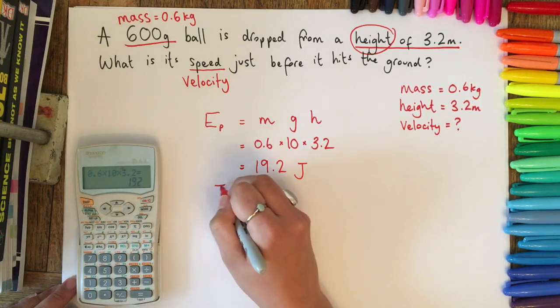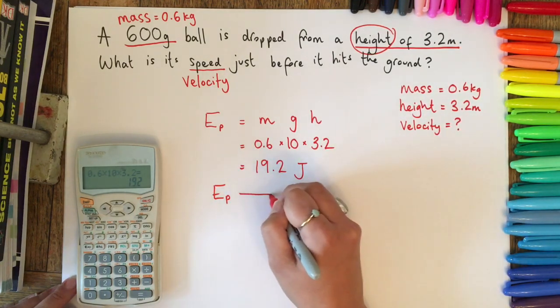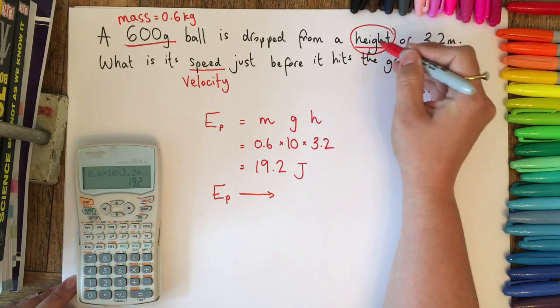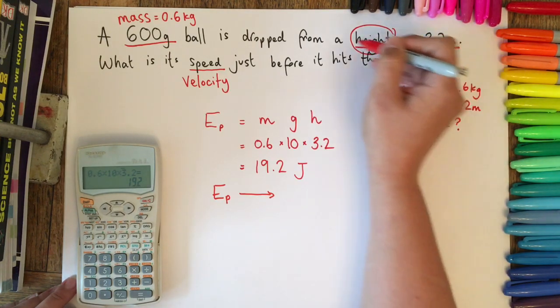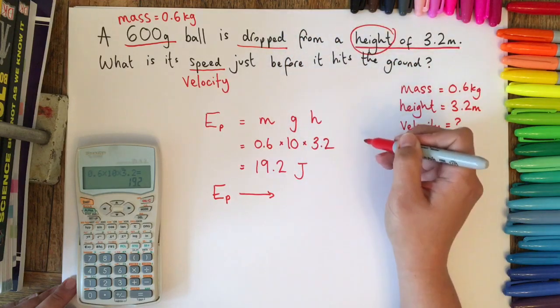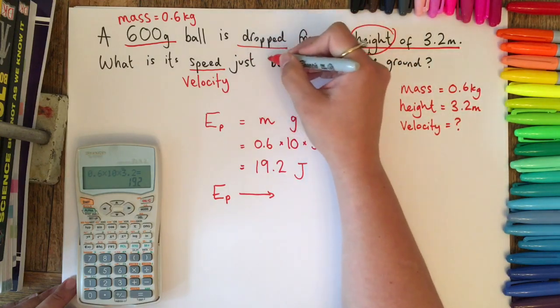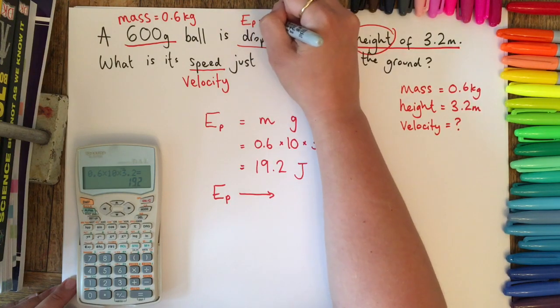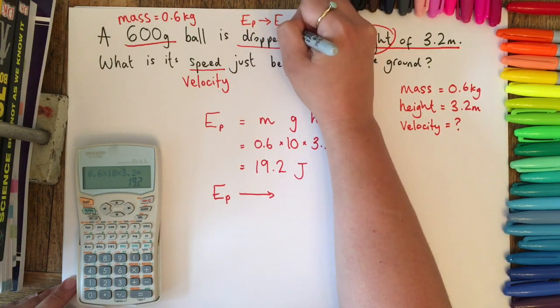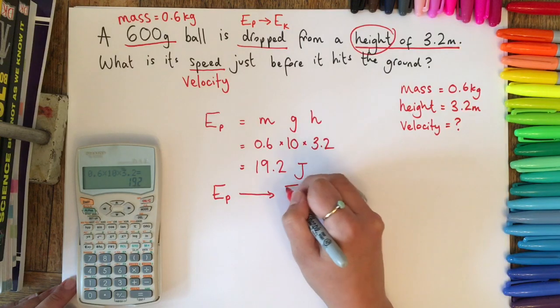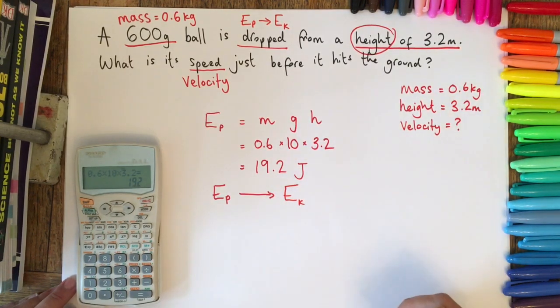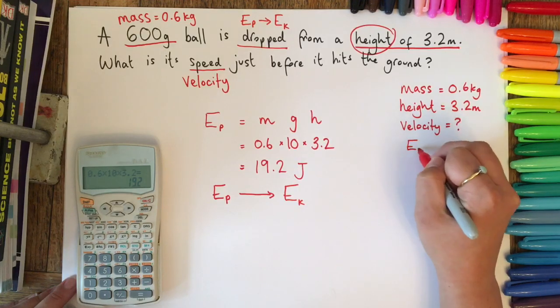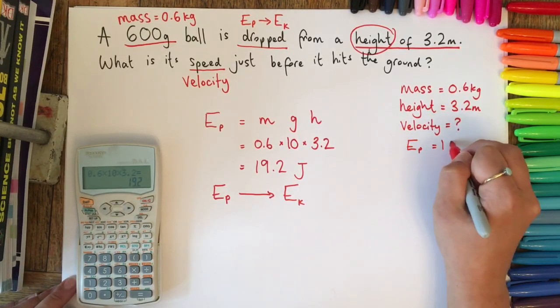Next, the assumption that we need to make is that all of the potential energy is going to be converted when it's dropped. It's going to have this potential energy at a height of 3.2 meters, it's then going to drop, and you should know that whenever anything is dropped we have potential energy being converted into kinetic energy. So this is the assumption we are going to make.